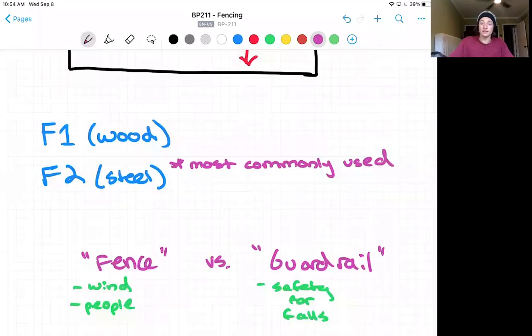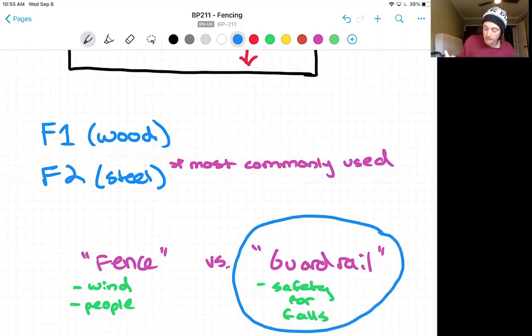Now one quick comment on a fence versus guardrail. The fencing detail itself we're talking about is not the fence along the span of the bridge, but this is for when the abutment is high enough that there is a fall risk for people walking. Now a fence is meant to keep out wind and keep out people, and a guardrail is meant to provide safety for falls. And in this case, a guardrail is what we really mean when we're discussing the fencing details because we want to keep people safe above that six foot or 1.8 meter distance.